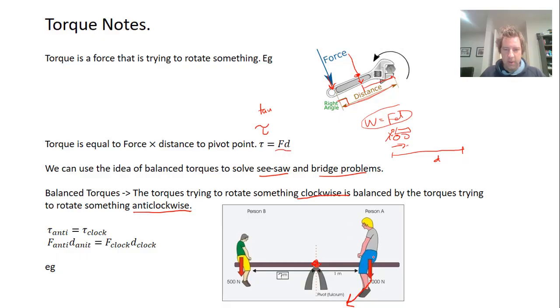So there's a torque. This person, person A, is applying a torque trying to rotate the whole seesaw in a clockwise direction.